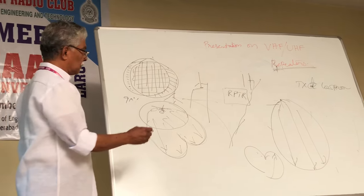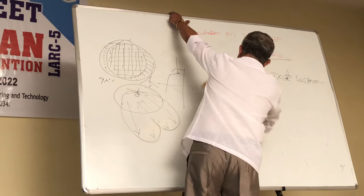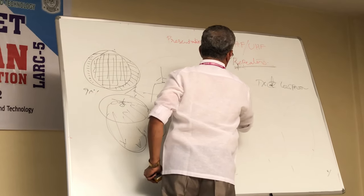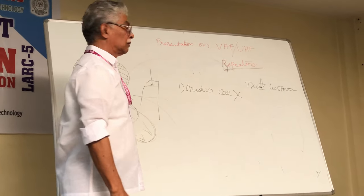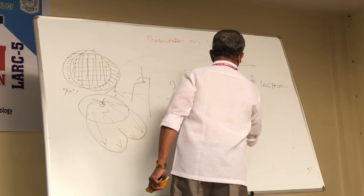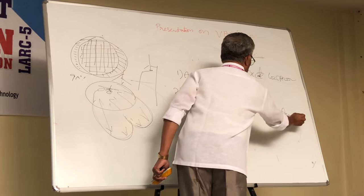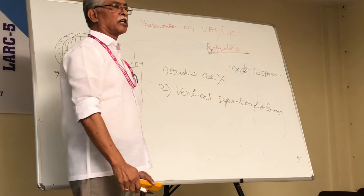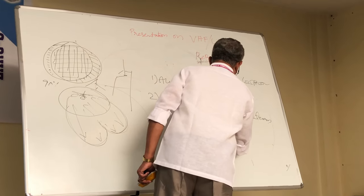Minimum thing as I am telling you — coming to the repeater: number one, audio/RDO-based COR is not accepted because you lose weak signals; number two, vertical separation of antennas is important — the radiation pattern distortion will be much less compared to horizontal; number three, don't go for QRO, always QRP only — never increase transmitting power of TX.